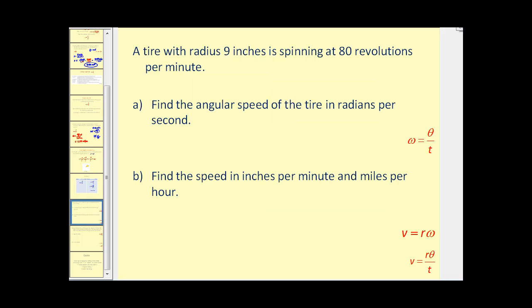Let's take a look at a couple examples. A tire with radius 9 inches is spinning at 80 revolutions per minute. We first want to find the angular speed or velocity and then find the linear speed or velocity. So we can gather from the given problem that our radius is 9 inches. And if we have 80 revolutions per minute that implies that our theta would be, well each revolution is 2π radians. So we'd have 80 times 2π. So our angle is going to be 160π radians.